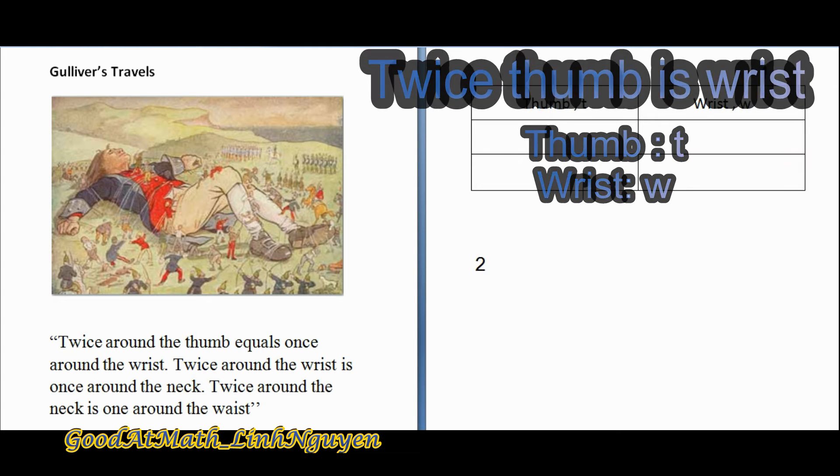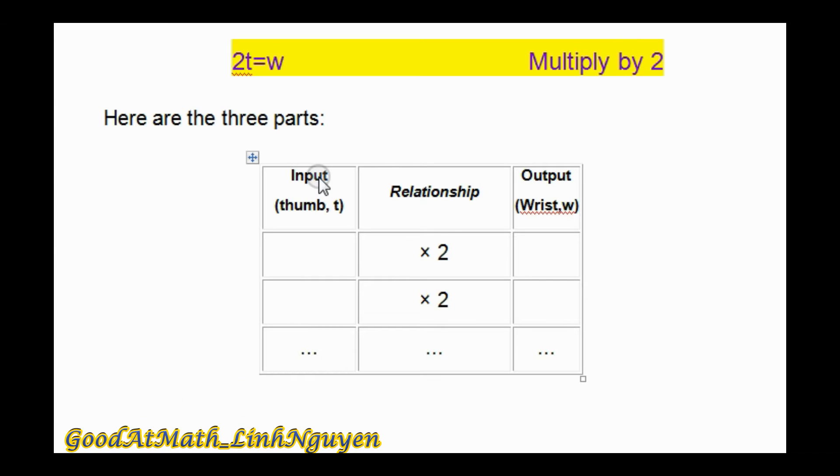I mentioned this in another video. The equation wrist is twice thumb is called multiply by 2.